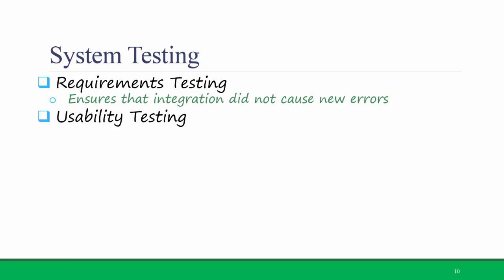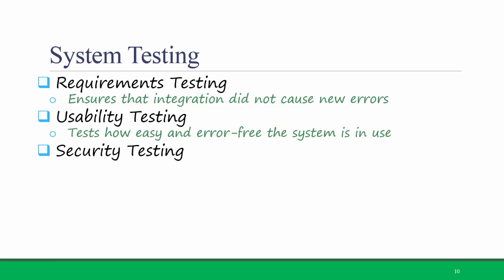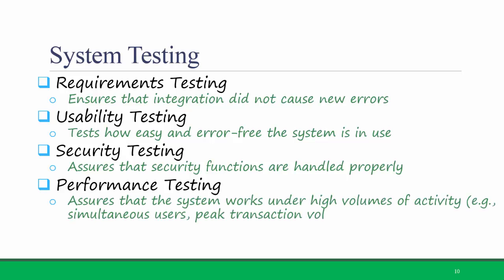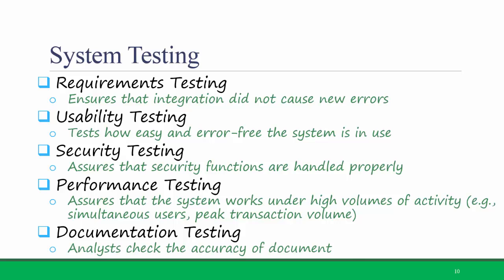Another is usability testing, which tests how easy and error-free the system is when people use it. There's security testing, which ensures that the security functions are handled properly. There's performance testing, which ensures that the system works under high volumes of activity, for example if there are a lot of students logged into Titanium at the same time. And finally is documentation testing, which is where analysts check the accuracy of the documentation. All of these are extremely important forms of system testing.